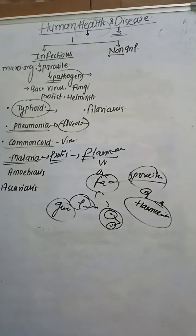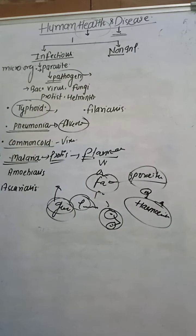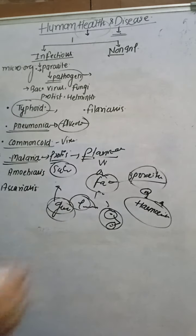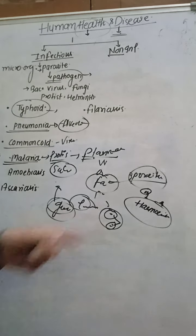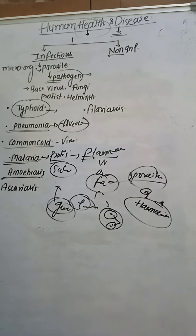Gametocytes are formed in the RBCs of the human being and fertilization occurs in the gut of the female Anopheles. After the gut, a zygote is formed that escapes and reaches the salivary gland of the female Anopheles, where sporozoites are stored and mature - very important. Quinine drug is used in the case of malaria, obtained from the bark of the cinchona tree. Gambusia fish larvae are released into ponds to eat mosquito larvae.